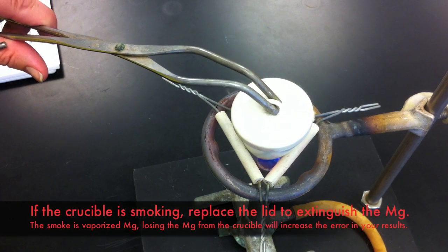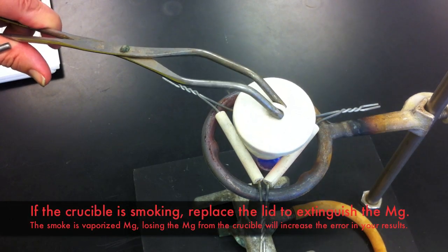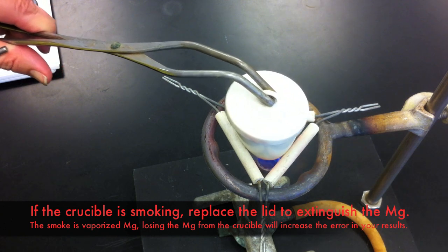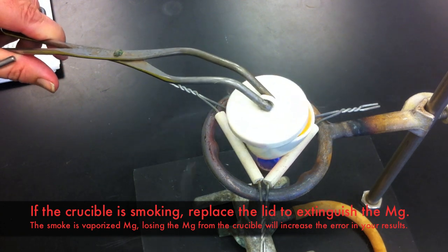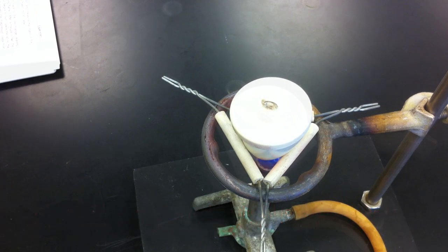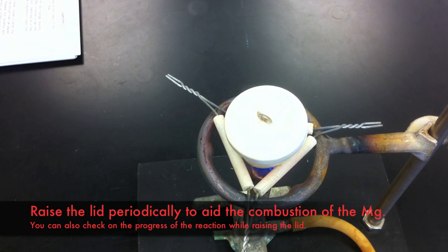During this reaction, you will want to ensure that oxygen gets in for the reaction to take place. You can either do this by tilting the lid off the crucible slightly to allow oxygen flow, or raising and lowering the lid periodically. Be sure not to let the reaction smoke too much. Any smoke coming out of the system is actually a loss of product.